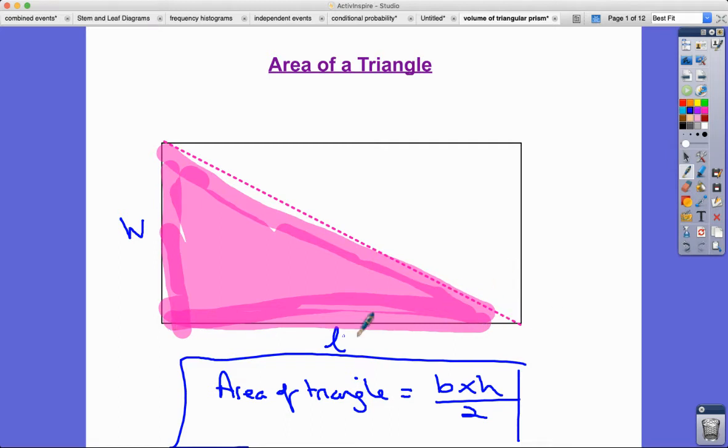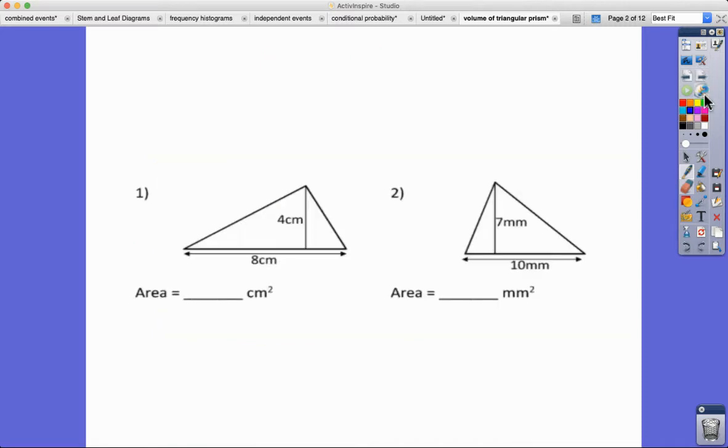This relates to this because another way of writing length here is actually the base of the triangle, so that'd be B for base. If I make that into a B instead, it's the base times by the height and then half it. It works. Let's look at some examples.